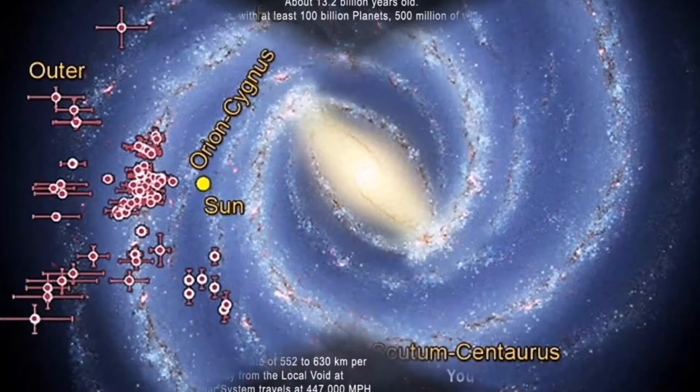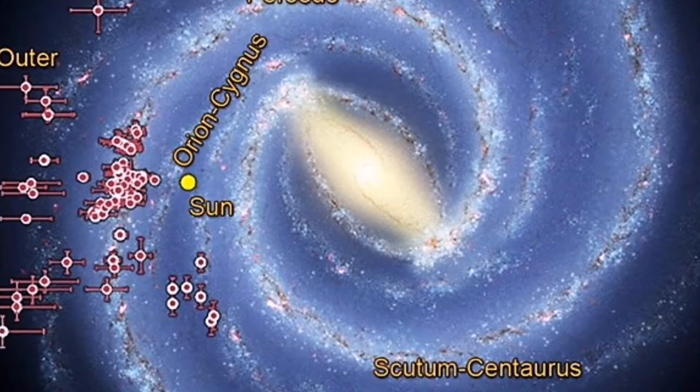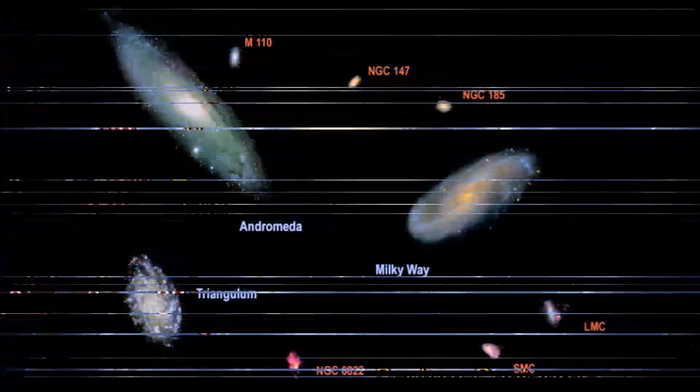He determined the majority of stars were thousands of light-years from the Sun, which was used to calculate the approximate location of the center of the galaxy. In addition, he discovered the Sun was about two-thirds toward the edge of the Milky Way.